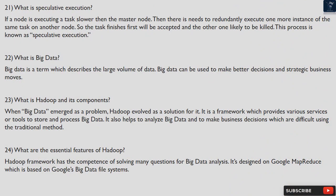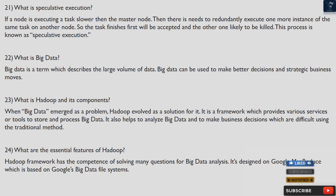Question 21: What is speculative execution? If a node is executing a task slower than expected, there is a need to redundantly execute one more instance of the same task on another node. The task that finishes first will be accepted and the other one is likely to be killed. This process is known as speculative execution.